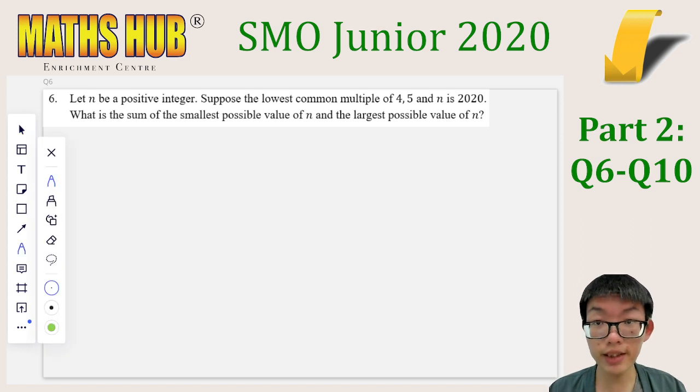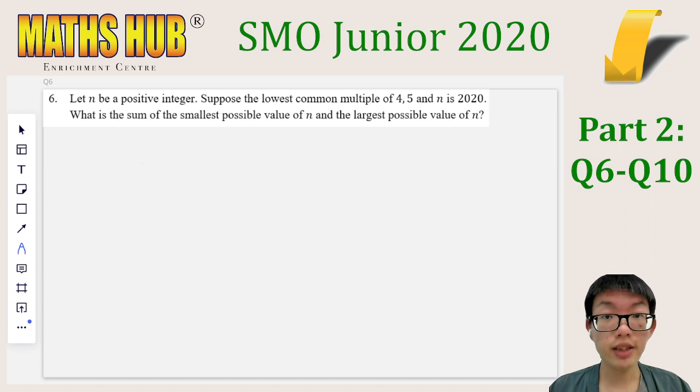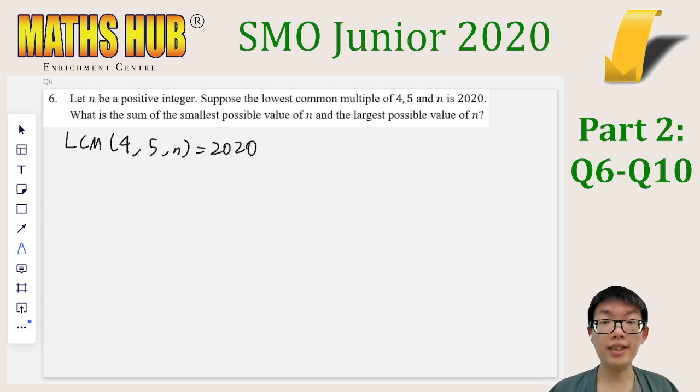Let's start immediately with question 6, which mentions n as a positive integer. The LCM of 4, 5, and n is 2020. It asks us to find the sum of the smallest possible n and the largest possible n. Whenever we see lowest common multiple or highest common factor being mentioned, it is logical that we focus on the prime factorization of the numbers. So 2020 is factorized as 2 squared times 5 times 101.